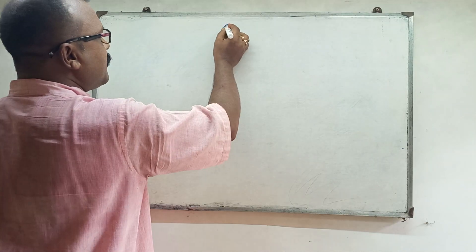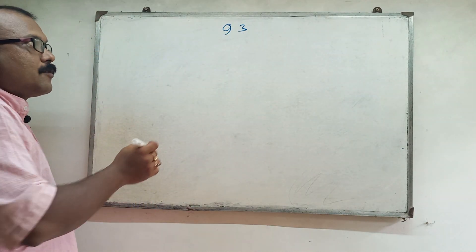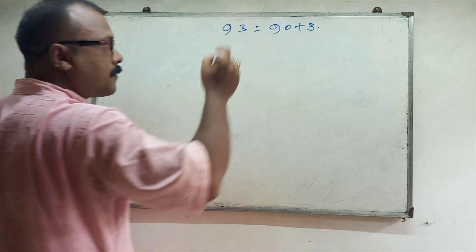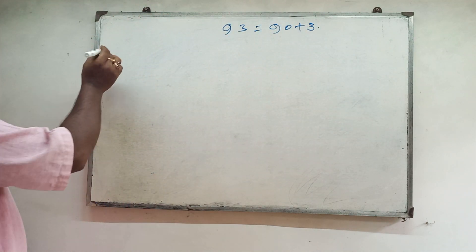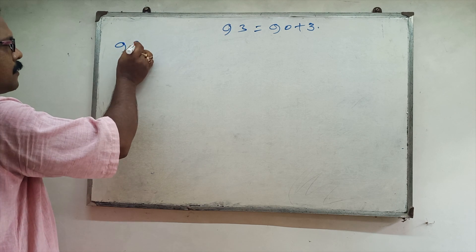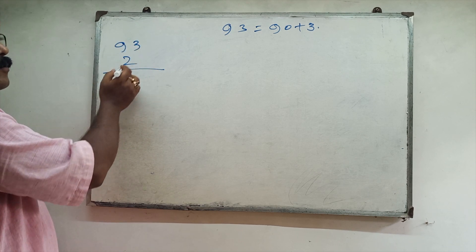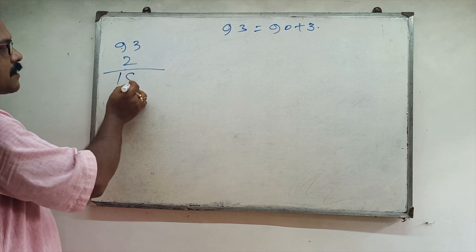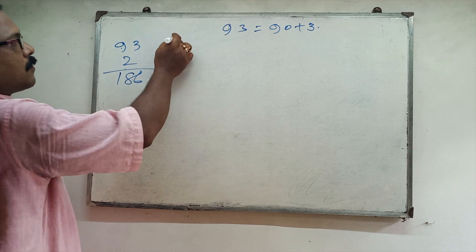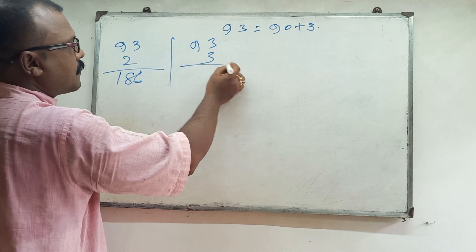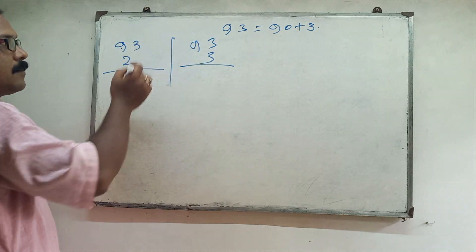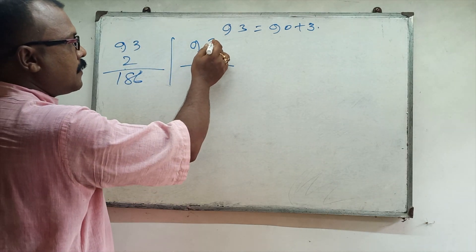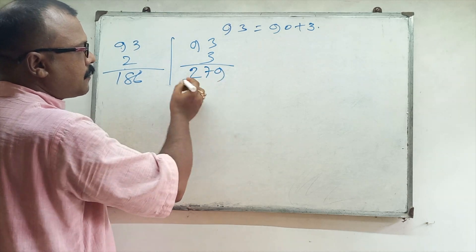So 93 table. 93 is 90 plus 3. 93 twos: 9 twos are 180, so 186. 93 threes: 9 threes are 270, so 279.